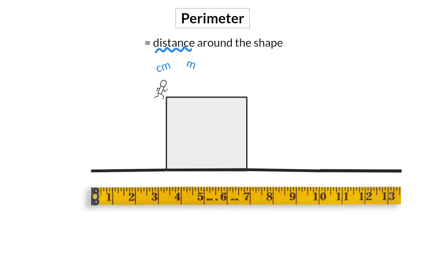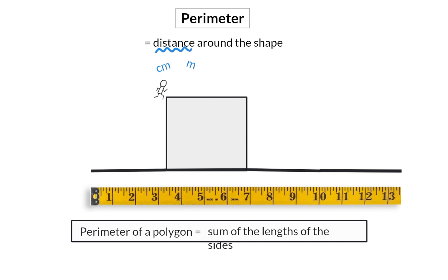A polygon is a shape that consists of straight lines, so to determine the perimeter of any polygon we simply get the sum of all the lengths of the sides.